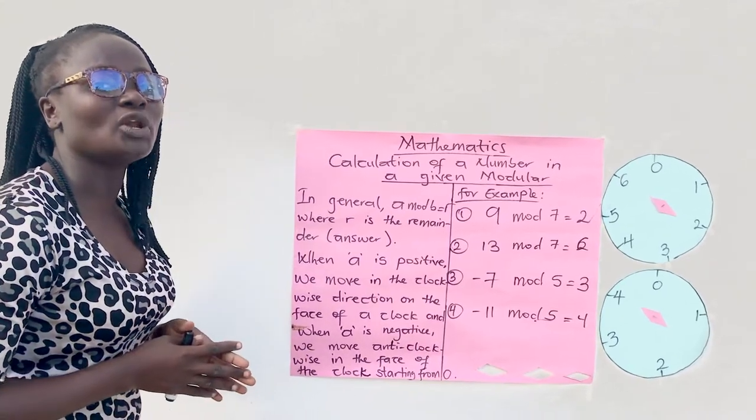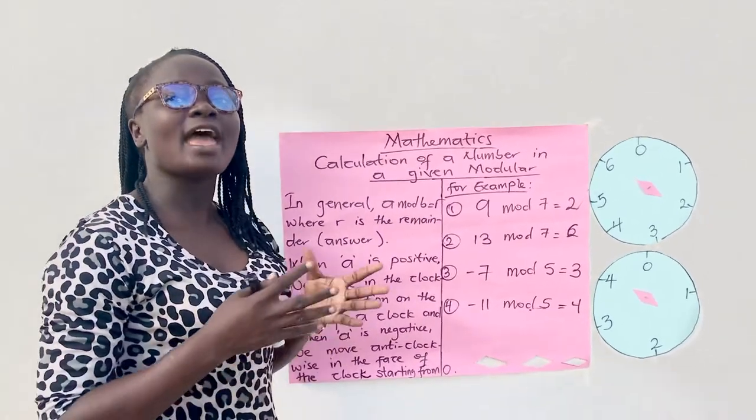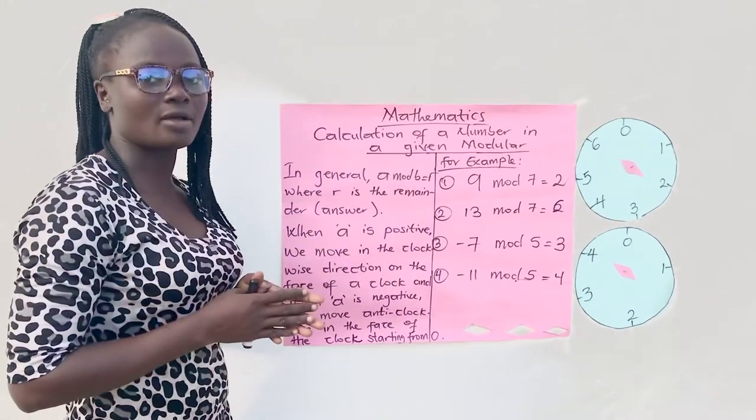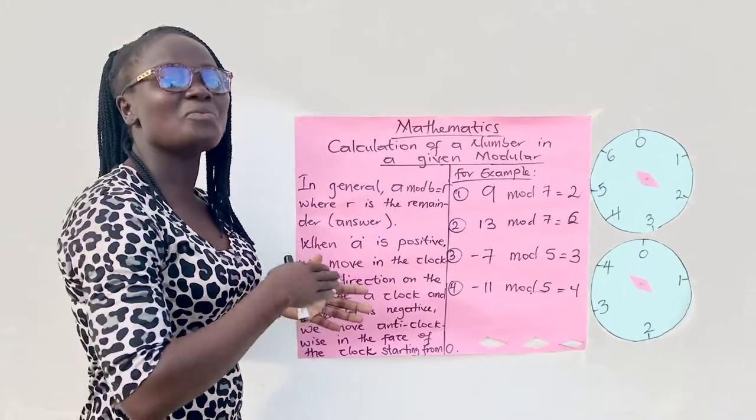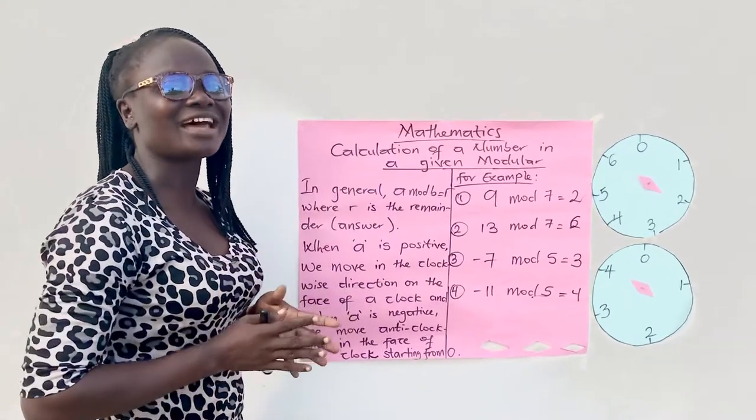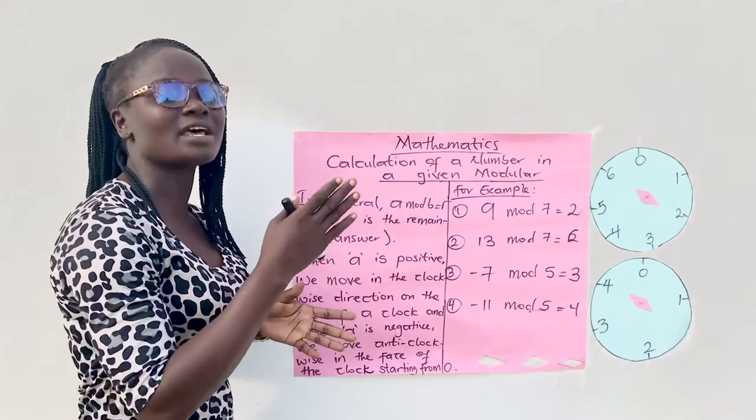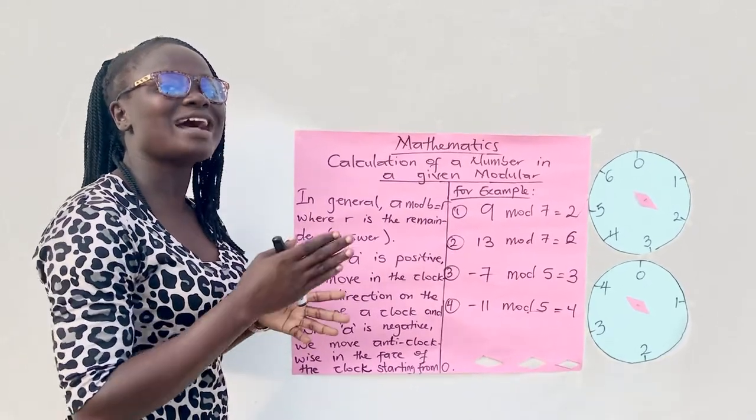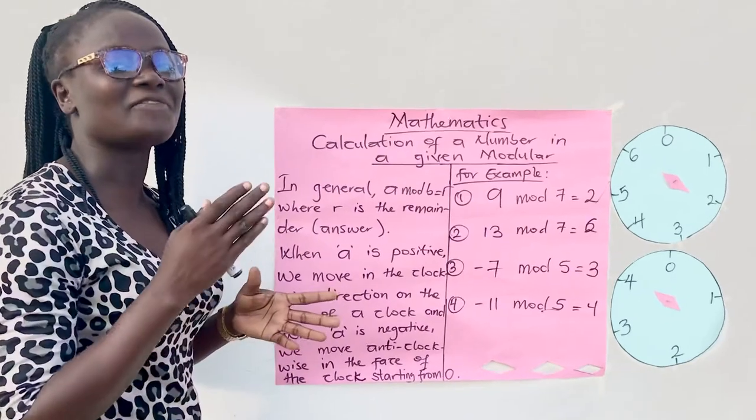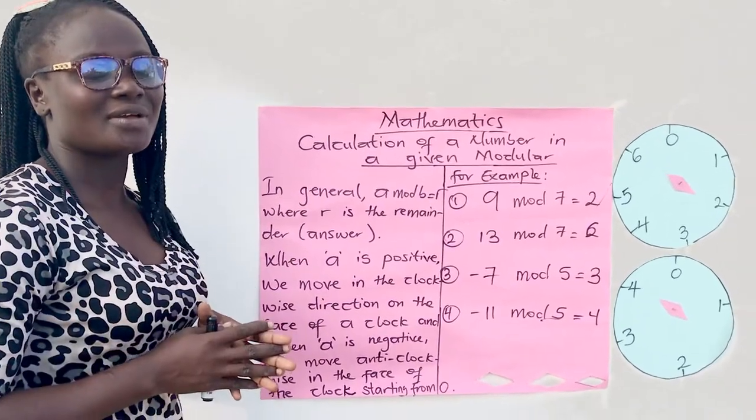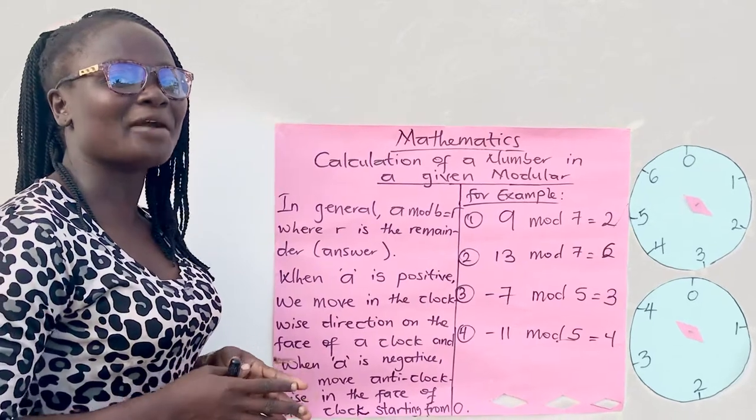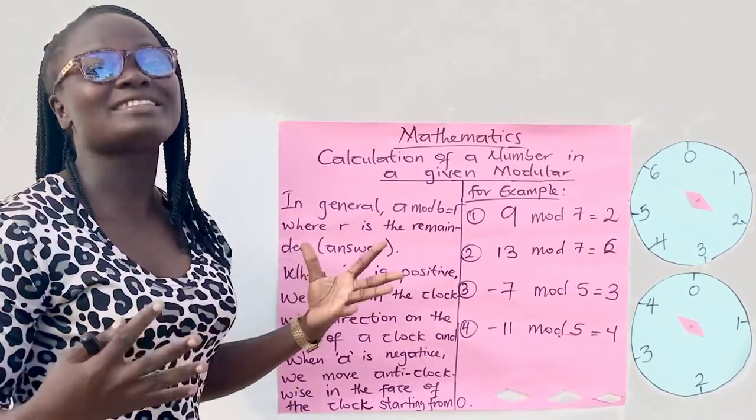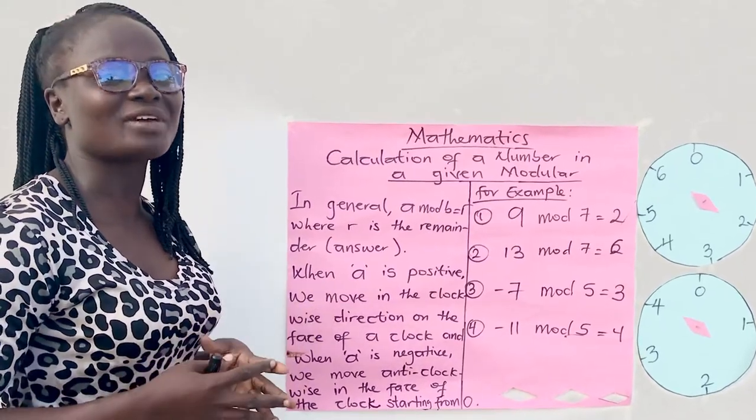In calculating modulo, when A is positive, on the face of a clock, we move in the clockwise direction starting from zero. And when A is negative, we move anticlockwise starting from zero. Our B is the number of divisions on the face of the clock. Let's pick some examples and go through together.